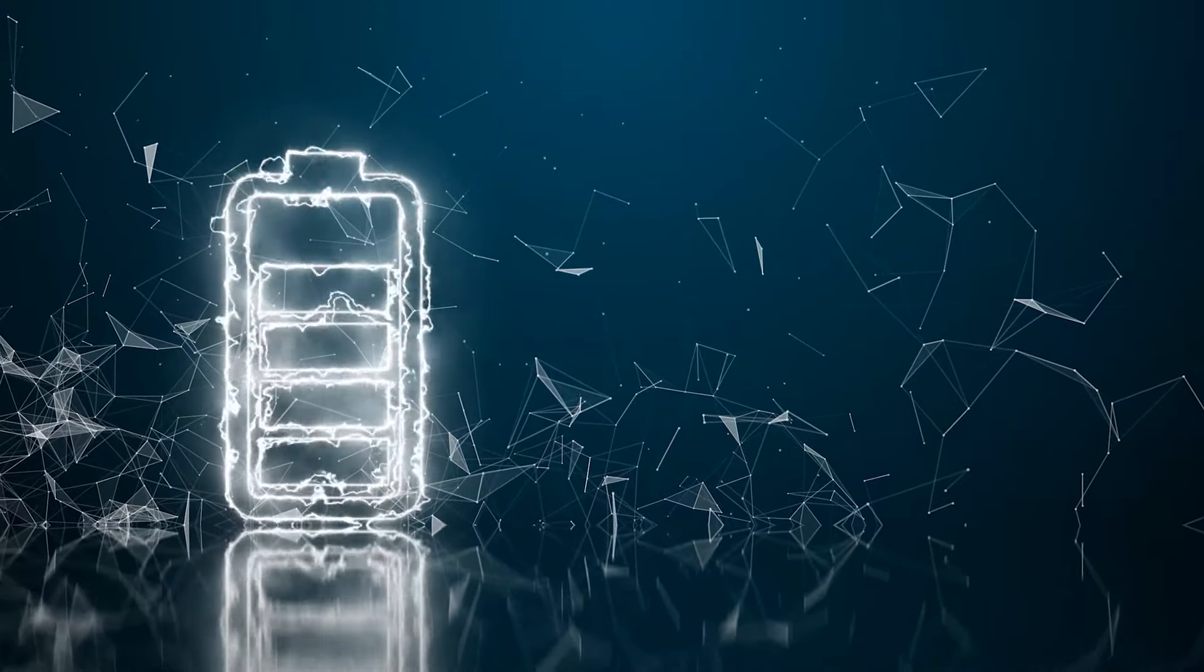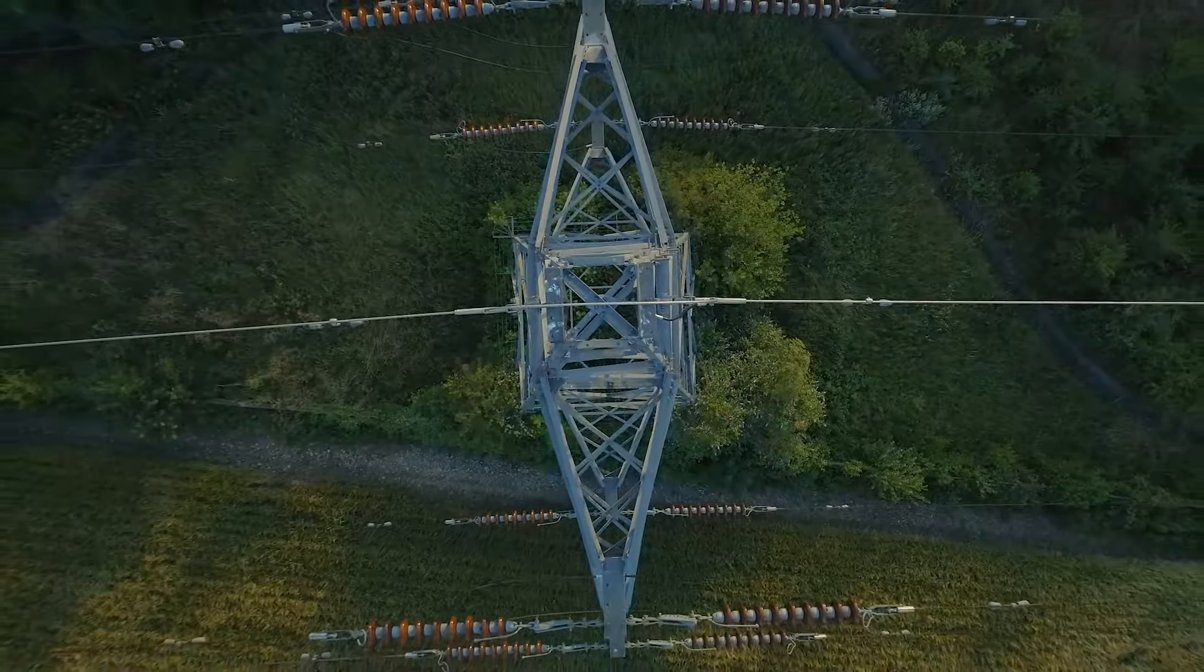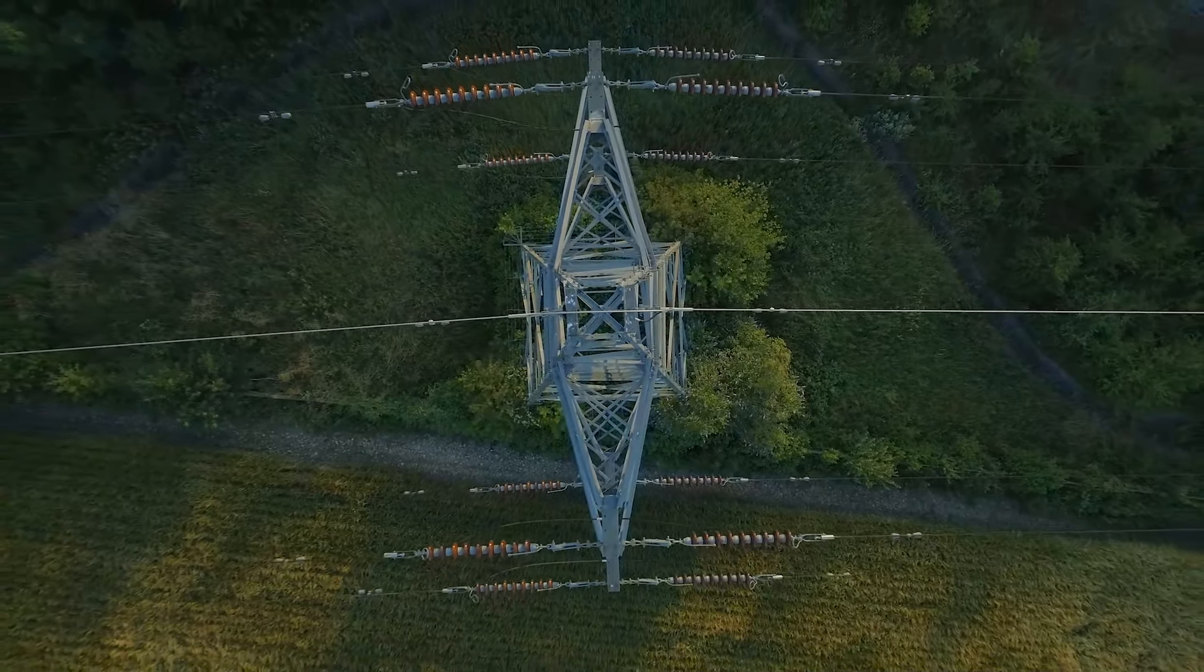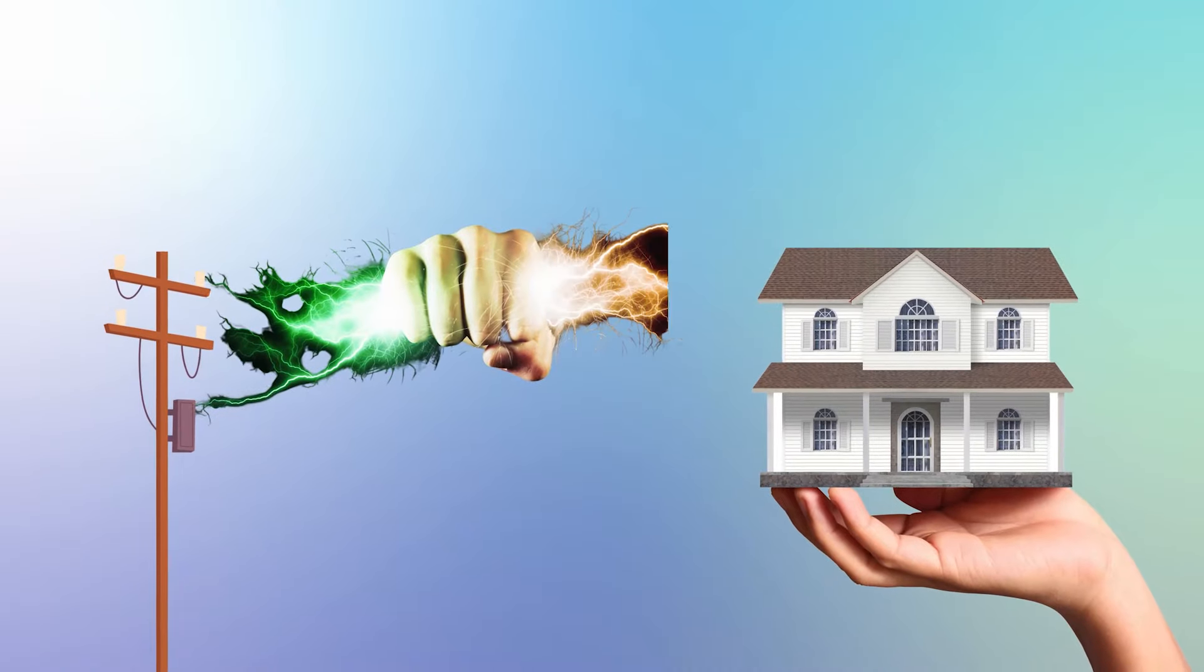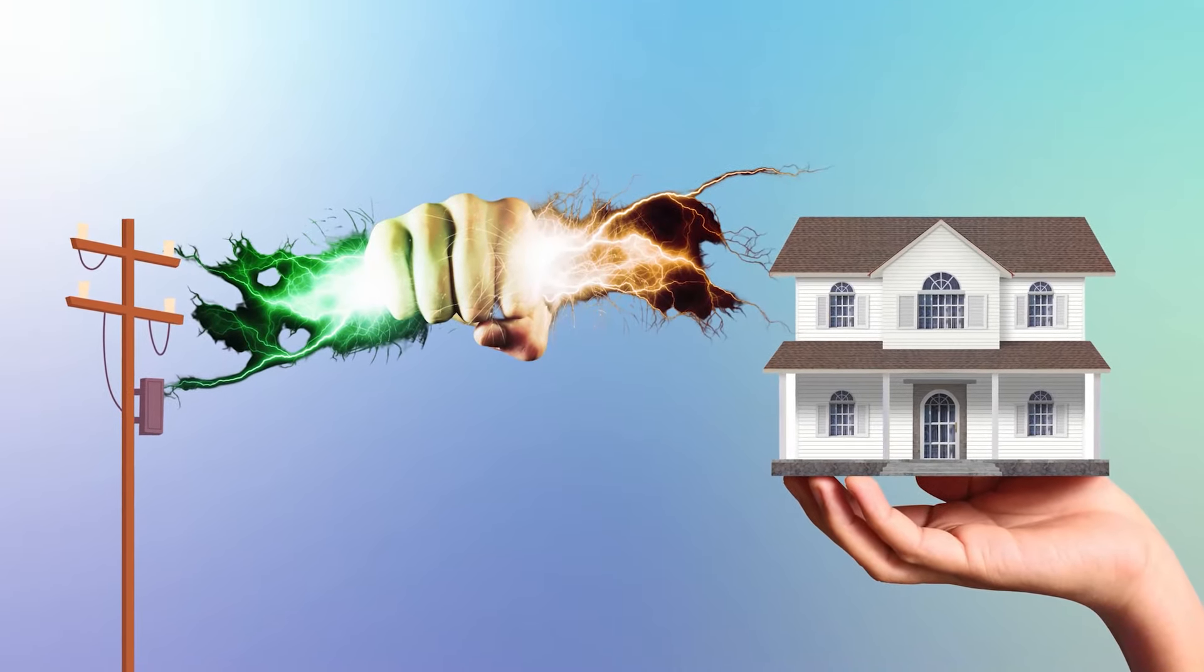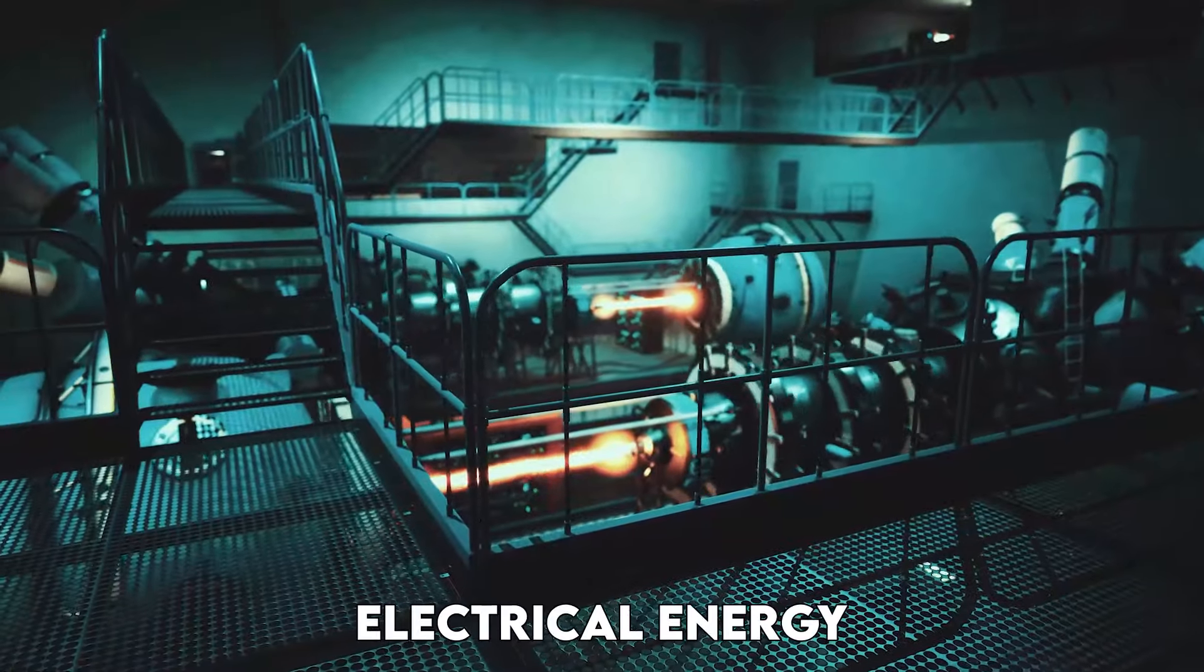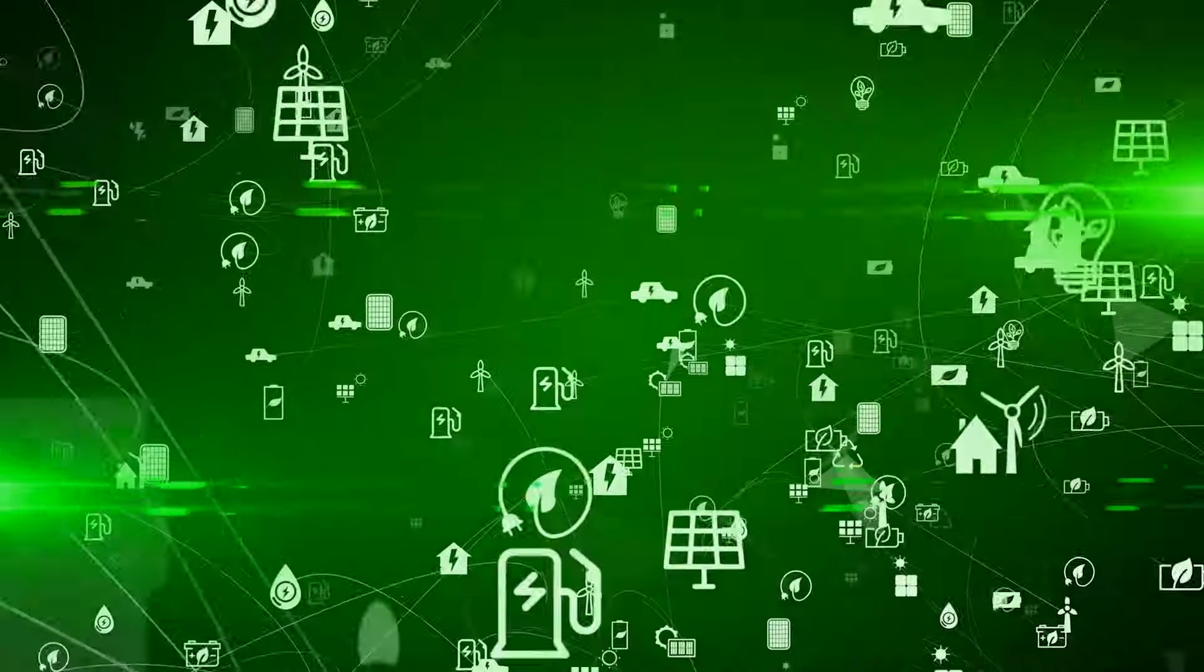These power lines are constructed with materials specifically chosen to minimize energy loss, ensuring that as much electricity as possible reaches its destination. Electrical energy, like all other forms of energy, encounters resistance as it flows.